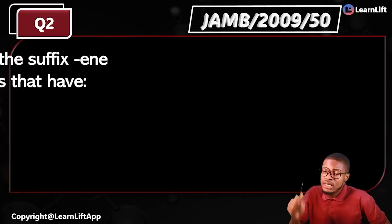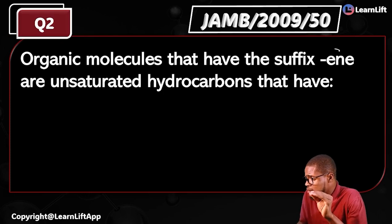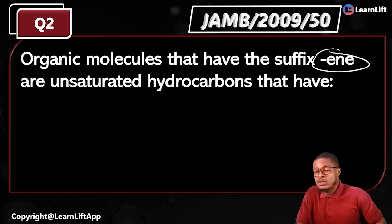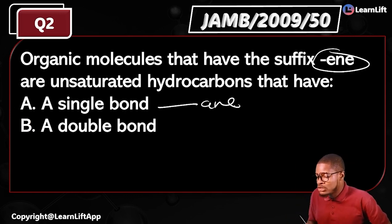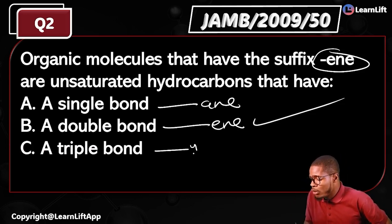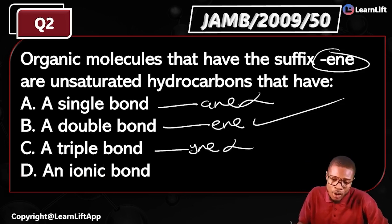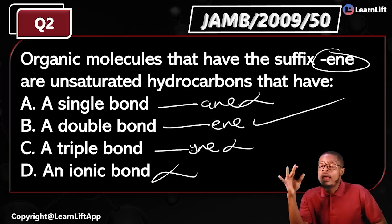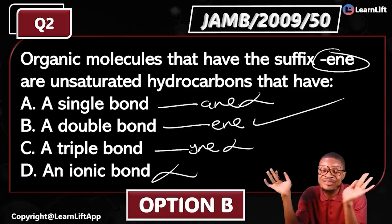JAMB 2009, question 50. The question says: organic molecules that have the suffix '-ene' are unsaturated hydrocarbons because they have — Option A: single bond — not true. Option B: double bond — correct, double bond is your '-ene,' making sense. Option C: triple bond — triple bond is your '-yne,' not true. Option D: ionic bond — totally different, that's under inorganic chemistry. The correct answer is option B: double bond.